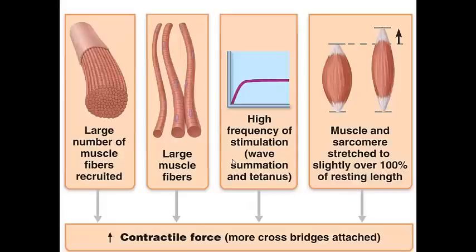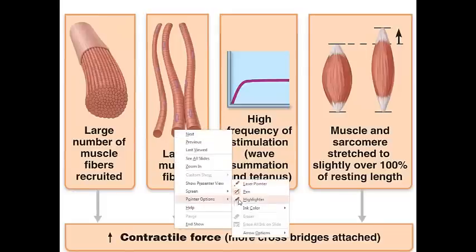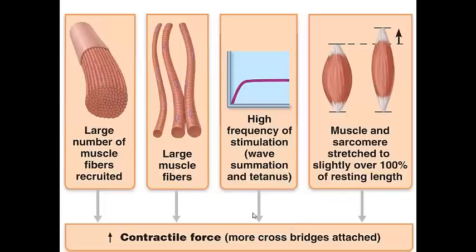This slide shows the factors that increase the force of skeletal muscle contraction. The first is the size of the muscle fibers being recruited — the bulkier the muscle, the greater its cross-sectional area, the more tension it can develop, and the greater its strength. Regular resistance exercise can increase force by causing these muscles to grow. Motor unit recruitment is also a key factor — if a muscle is going to be maximally stimulated, many motor units will be recruited.